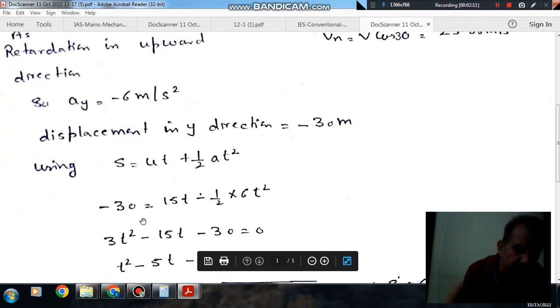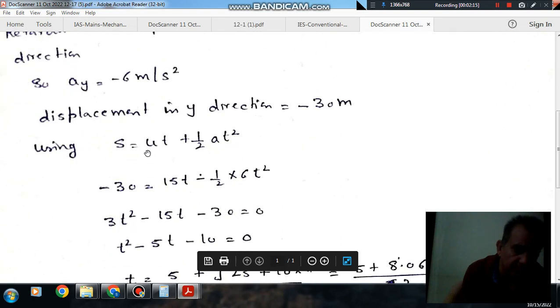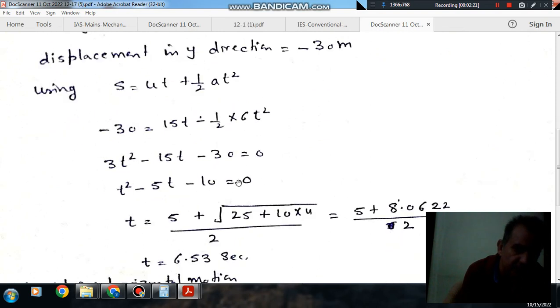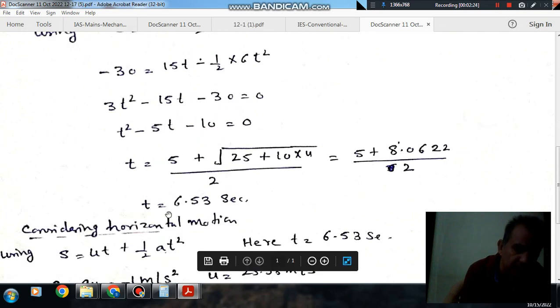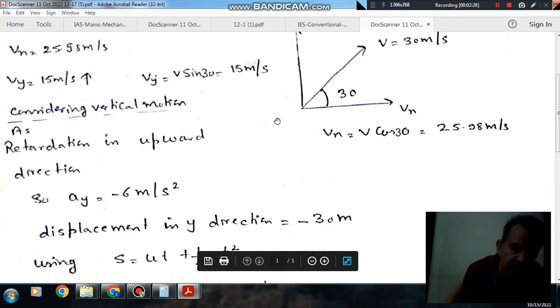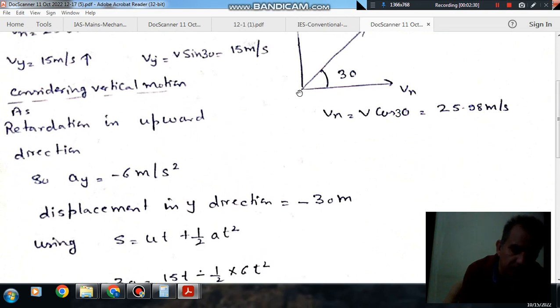Using s equals u t plus half a t squared, putting the value of u as 15 and s as minus 30 and a as minus 6, you can find out t by using quadratic equation. t comes out as 6.53 seconds. So it is the time to reach a downward distance of 30 m.